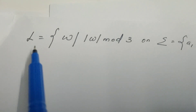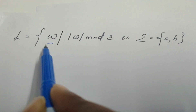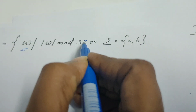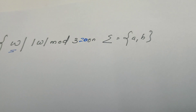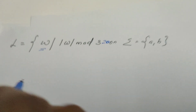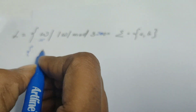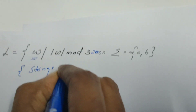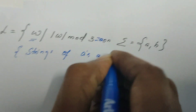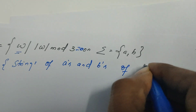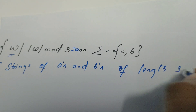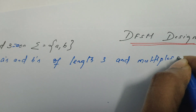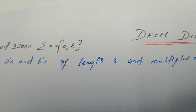Let us move to the next question. The language contains the set of strings w where the length of the string modulo three equals zero. This means strings of A's and B's of length three and multiples of three. Once again it is a problem concerned with the length of the string, similar to the previous problem.